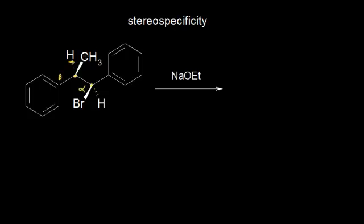That's different from the last video where we saw that we had two possible protons at the beta position, giving us two different conformations and two products, but one of those stereoisomers was favored. So in this case, we're only going to get one product.